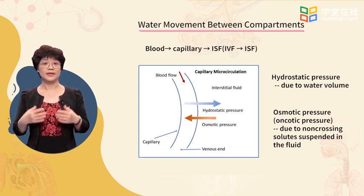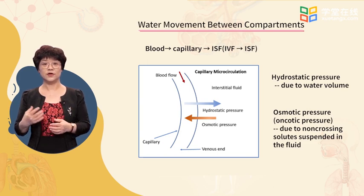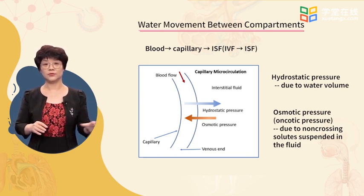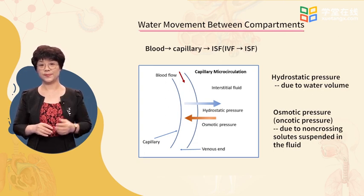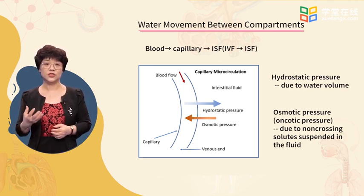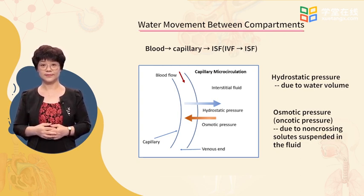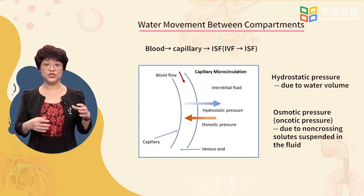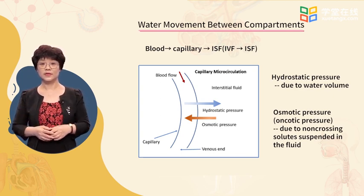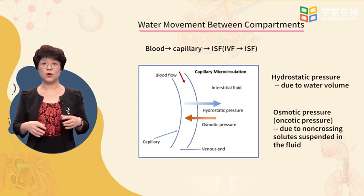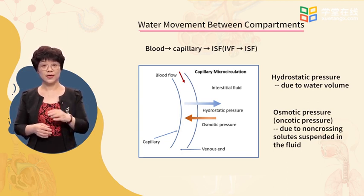At the arterial end of the capillary, water tends to move out into the interstitial space because the hydrostatic pressure is higher than that at the venous end. As blood reaches the venous end, the capillary pressure dramatically decreases, so water moves back into the capillary.